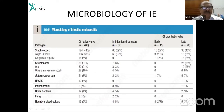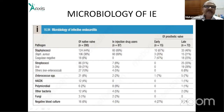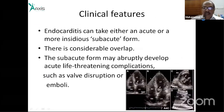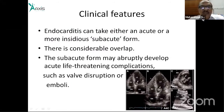Streptococcus accounts for approximately 44%, staphylococci around 30%, and enterococci about 8% of cases. Clinically, infective endocarditis presents in two forms: an acute form and a subacute form.